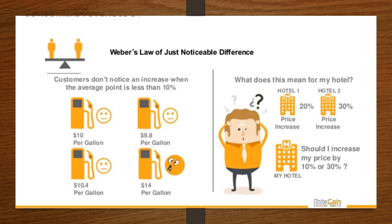In the picture on this slide, it shows a couple different ideas of JND. The one on the left shows how a customer reacts to differences in gas prices. The customer doesn't necessarily make a big reaction when the gas ranges from $9.80 to $10.40, but when the customer then sees the gas prices at $14 is when the major reaction occurs. It comes to show that more than a 10% increase is when people notice the difference.